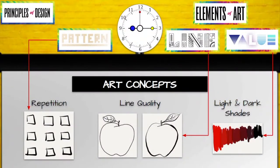In this lesson we will be drawing and coloring four of the same image. The principle design pattern will be used in repetition of an image. Under elements of art we will be using line quality which refers to the varying thickness or texture in the lines that we draw. Finally we will be showing value with light and dark shades of color.